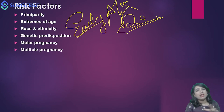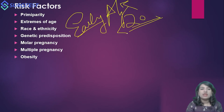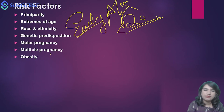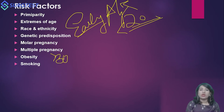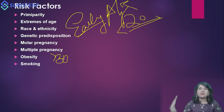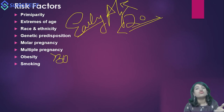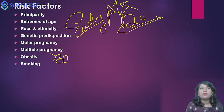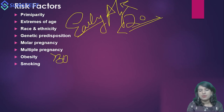Multiple pregnancy — twin or triplet gestations — means a larger placenta, leading to a higher risk of developing hypertensive disorders. Obesity with a BMI of more than 30 is a high risk factor for developing PIH. Smoking releases metabolites responsible for vasoconstriction, particularly in the placenta, leading to uteroplacental insufficiency and defective trophoblastic invasion into the spiral arterioles, resulting in PIH.